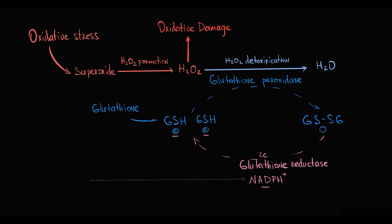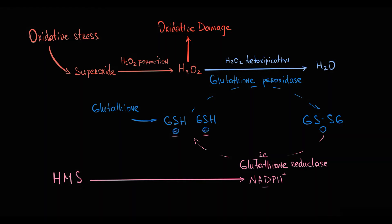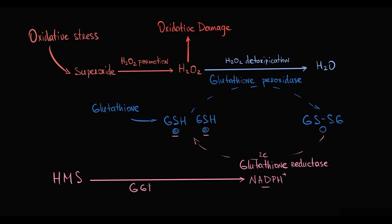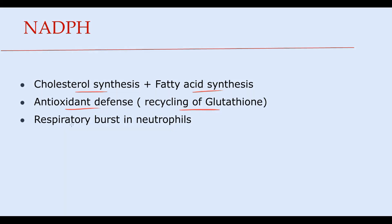The major source of NADPH molecules is the Hexose Monophosphate Shunt, and the crucial enzyme in this pathway is Glucose-6-phosphate dehydrogenase. The third function of NADPH is that in neutrophils, NADPH provides the respiratory burst, which is the mechanism to kill bacteria. Thus, NADPH also participates in immune defense.